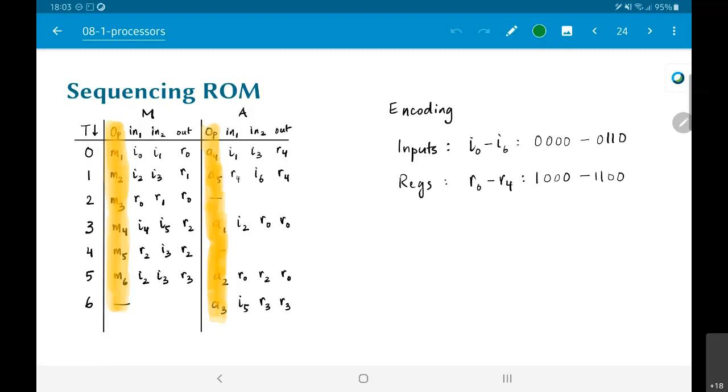The interesting thing is now that I have this encoding, let's look at what would be done in time step 0. I can basically look at what needs to be done: I need to feed I0 and I1 to the multiplier and route the output to R0, and I need to feed I1 and I3 to the adder and route the output to R4. So effectively, I can create a binary string like this: 0000 0001, etc. So 12 bits for the multiplier, 12 bits for the adder, which basically tell me exactly where each of those hardware units is getting its input from and where it is sending its output.